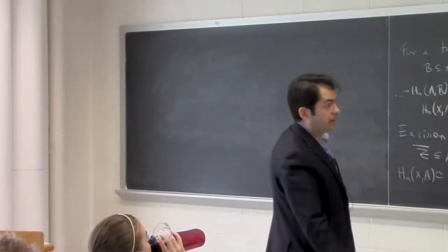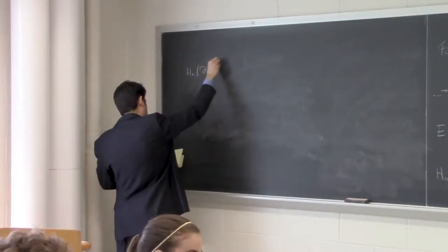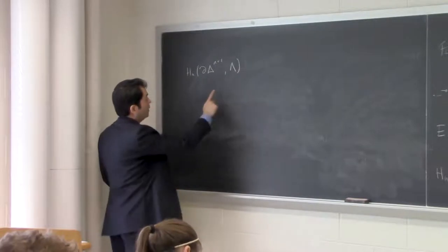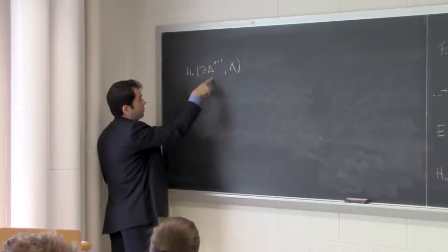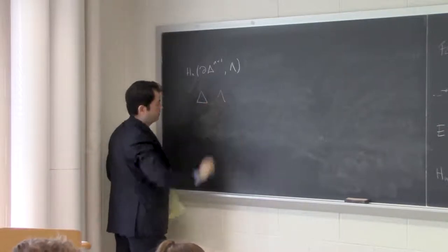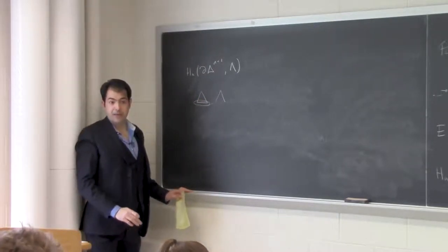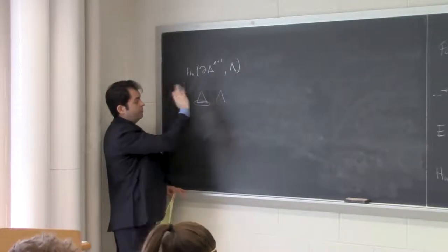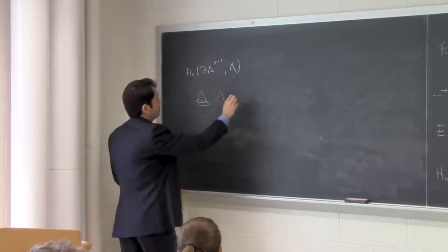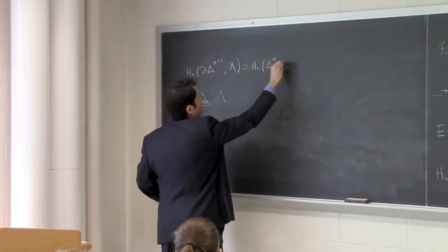Next, let's stare at H_n(∂Δ^{n+1}, λ). Think about the triangle: the boundary looks like three sides, and now we're collapsing λ (which is all sides except the last face). So all that's left is the last face, and you're collapsing all of its boundary. What you get here is the same as Δ^n collapsed to its boundary.